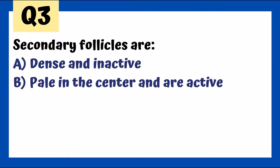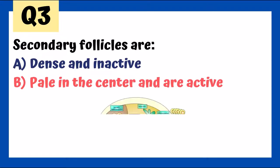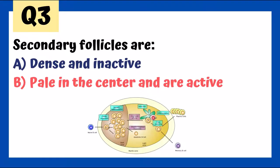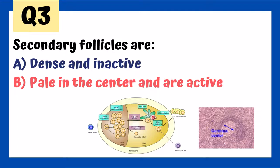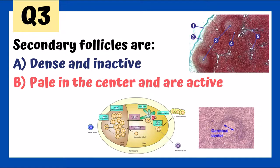Secondary follicles are pale in the center and active — this reminds us of histology. We see B-cells proliferating in the pale center. In histology we see the germinal center, pale in the center. Another histologic picture shows number three pointing to the pale centers, the germinal centers, representing B-cell proliferation.